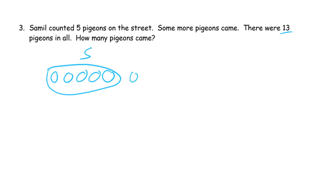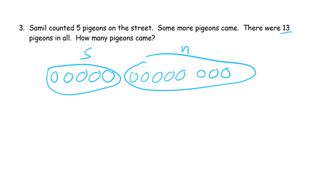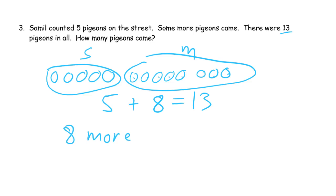So continuing from five: six, seven, eight, nine, ten, eleven, twelve, thirteen. So these are the more pigeons that came. How many are there? One, two, three, four, five, six, seven, eight. So we had the five on the street plus the eight more that came equaled 13 pigeons in all. Eight more pigeons came. Here's how you spell pigeons.